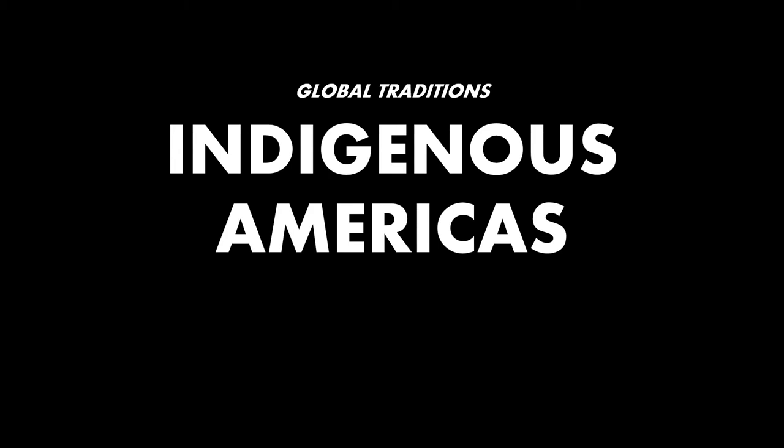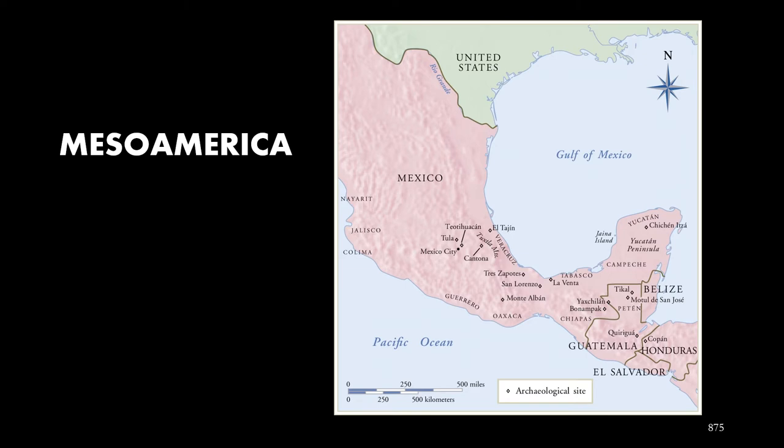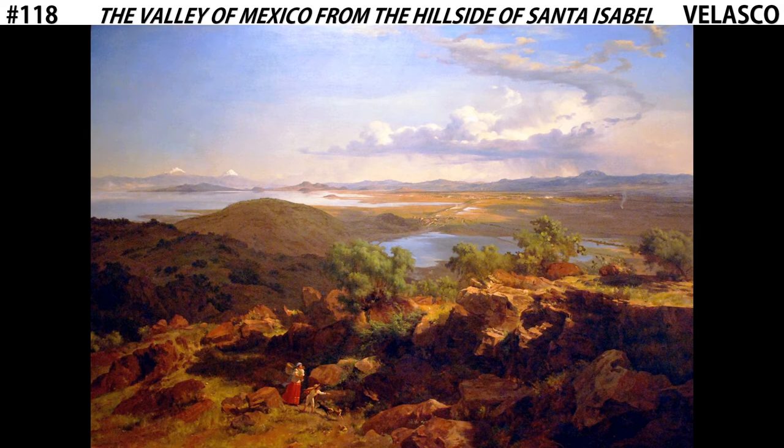Hi, this is Digital Beers Born. Welcome back for more AP Art History. We're looking at the Indigenous Americas, specifically Mesoamerica in Mexico. We're going to finish this chapter with a painting called The Valley of Mexico from the Hillside of Santa Isabel by the artist Jose Maria Velasquez.